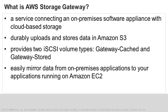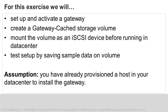For this exercise, we'll work with gateway cached volumes. Data written to gateway cached volumes is stored in Amazon S3, with only a cache of recently accessed data stored locally. This minimizes the need to scale your on-premises storage infrastructure and is ideal for corporate file share and backup scenarios. We will walk through a simple example to backup data to Amazon S3.